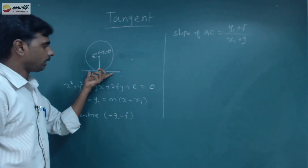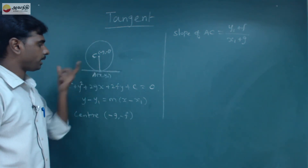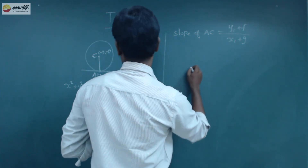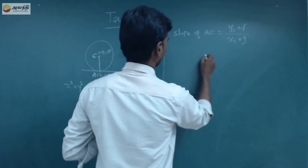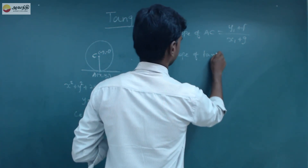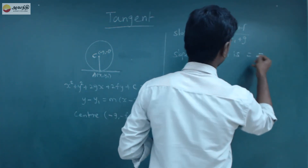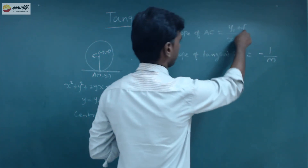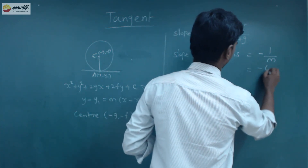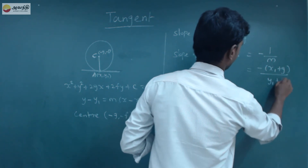This line is perpendicular to this line, so we take the slope as minus 1 by m. That is the slope of the tangent. The slope of tangent equals minus 1 by m, so m equals (x1 + g) divided by (y1 + f). That is the line.